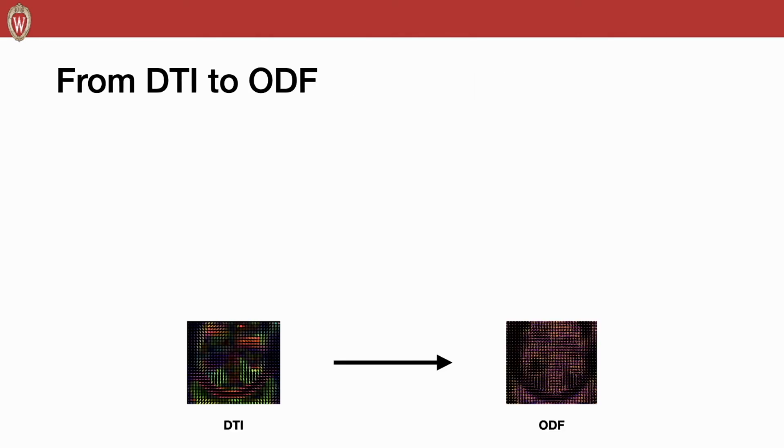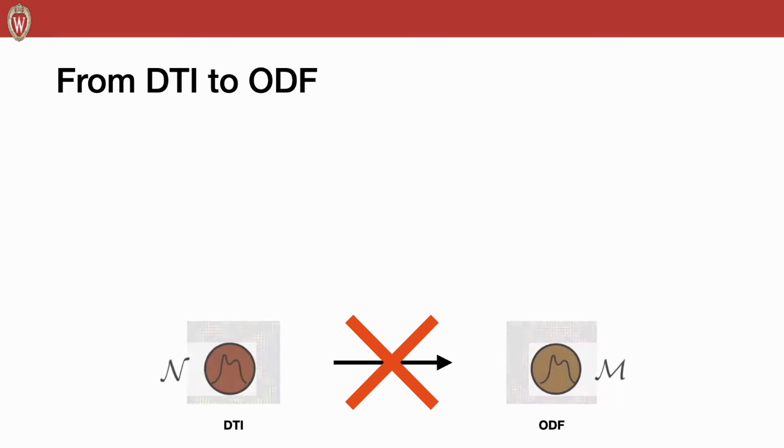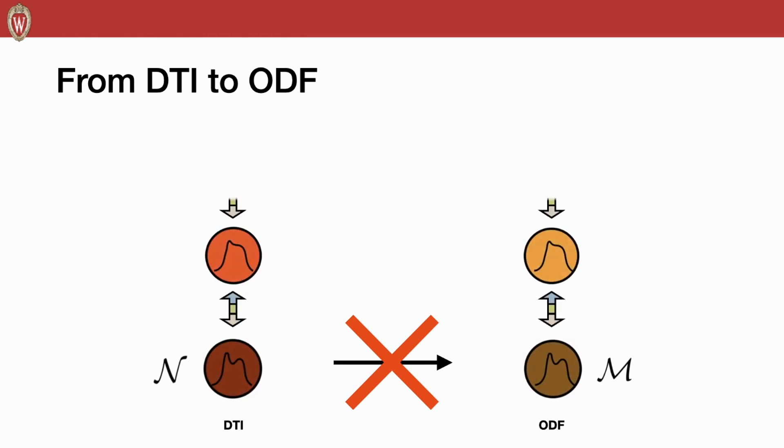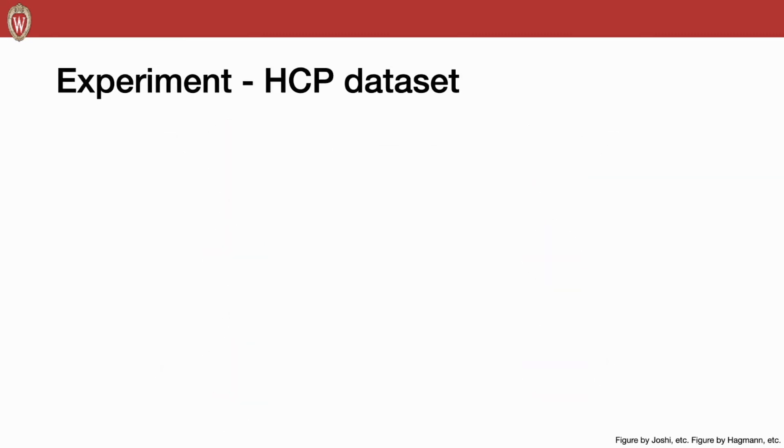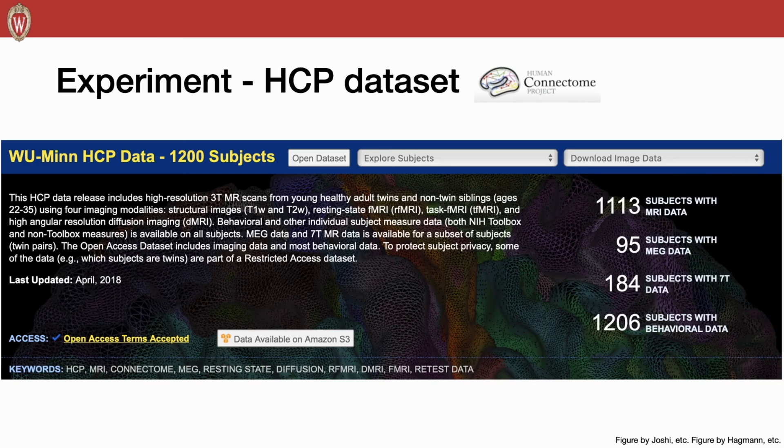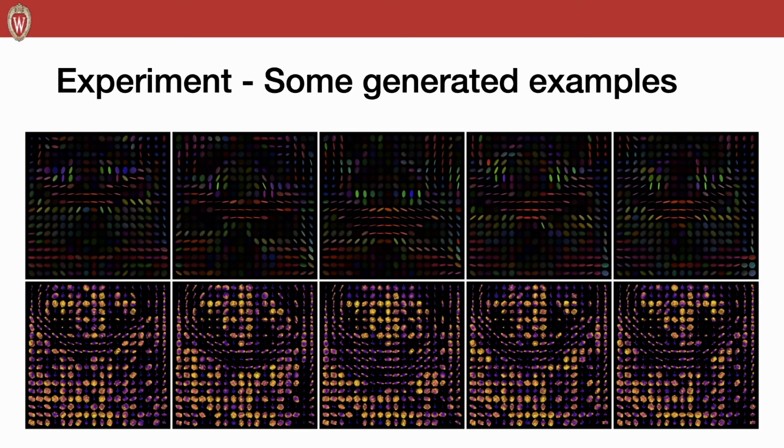Let's go back to our main goal, which is to generate ODF based on DTI. Since directly generating is not good enough, we first invertible map DTI and ODF into the latent space where the distribution is Gaussian. And then we define the transformation in the latent space. For the experiment, we apply our model on the HCP dataset, which contains more than 1000 samples. This is the generated ODF from our method. The fiber bundles are preserved well.